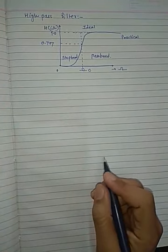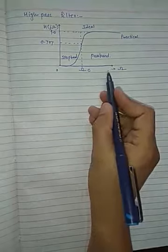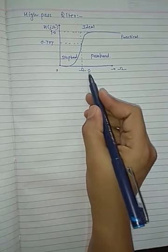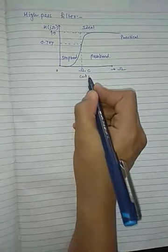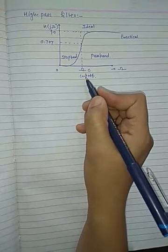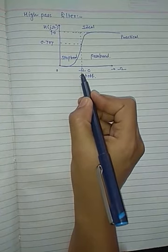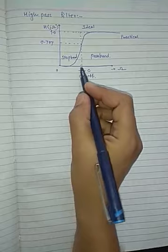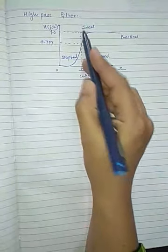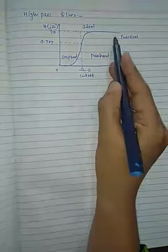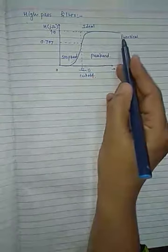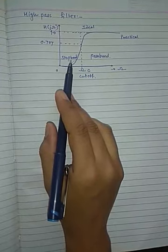In the case of the high pass filter, it allows high frequencies above Ω_C, i.e., frequencies greater than Ω_C. Ω_C is the cutoff frequency, and it rejects the frequencies between Ω equal to 0 and Ω equal to Ω_C. The magnitude response of an ideal and practical high pass filter is shown in this figure; the dotted line indicates the ideal response while the solid line indicates the practical response. This is the pass band and this is the stop band for the high pass filter.